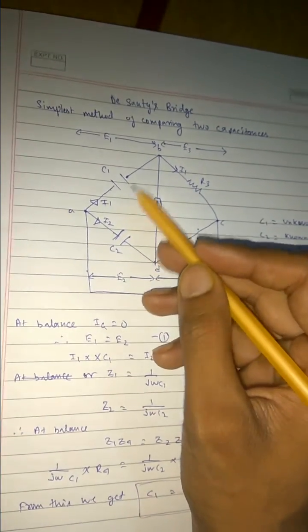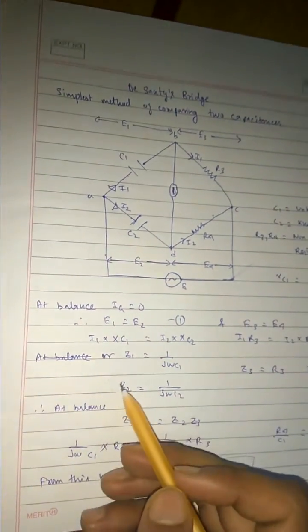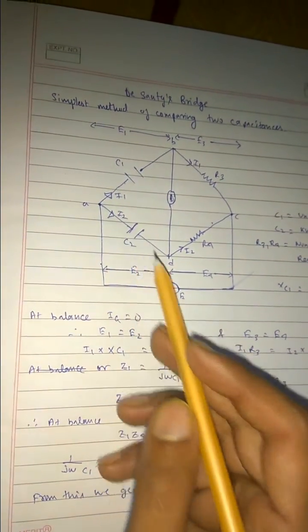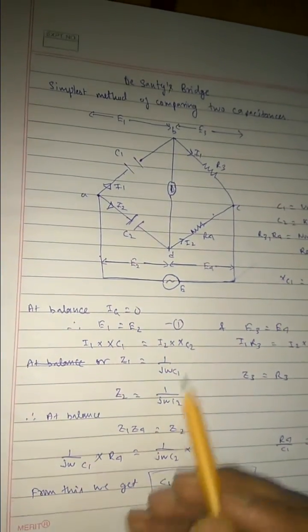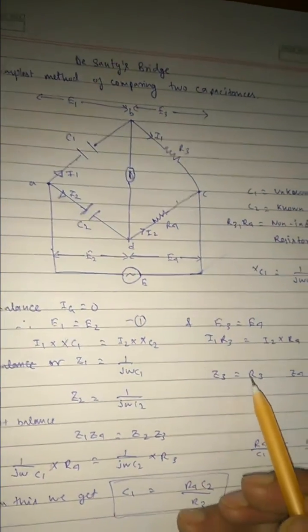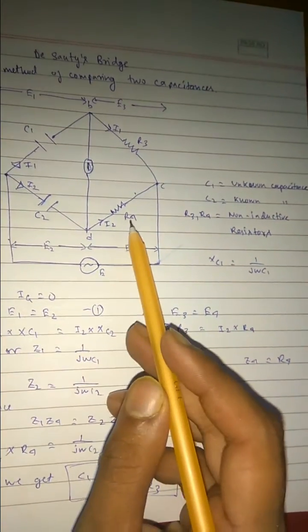XC1 equals to 1 by jωC1, or in a more easy way it is Z1 that is 1 by jωC1. This impedance is called 1 by jωC2. This resistance or impedance is R3 and Z4 equals to R4. This is our impedance.